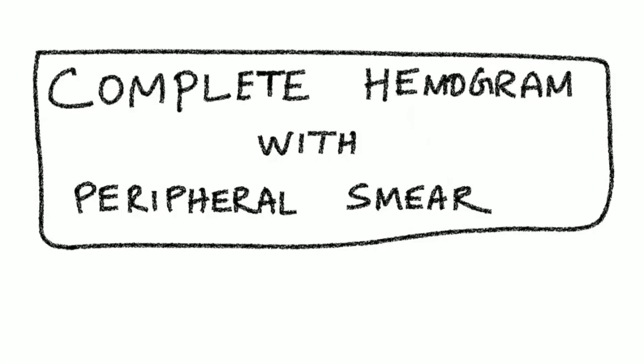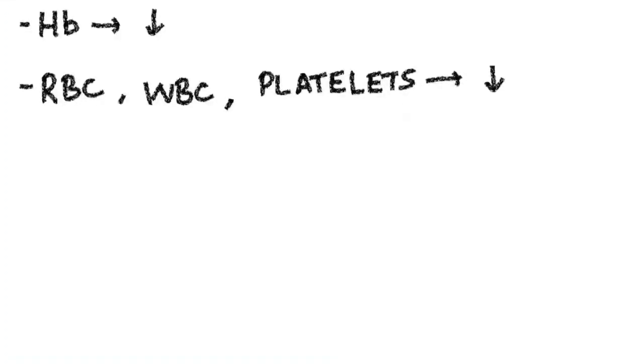Diagnosis can be done with the help of complete hemogram with peripheral smear. In complete hemogram, we can see hemoglobin is decreased because this is anemia. Along with that, all the cell lines are found to be decreased—RBC, WBC, platelets are decreased—because here the DNA synthesis is affected by B12 deficiency, affecting all the cell lines.